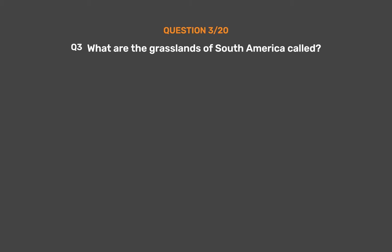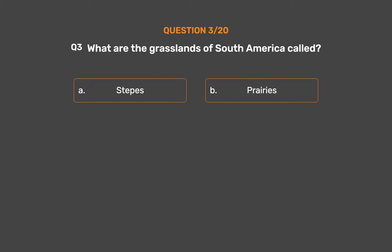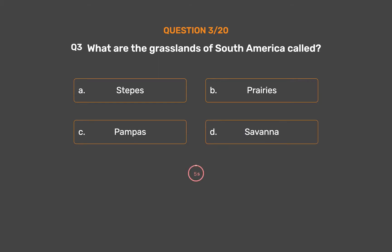Question number 3. What are the grasslands of South America called? Option A: Steppes. Option B: Prairies. Option C: Pampas. Option D: Savannah. The correct answer is Option A, Steppes.